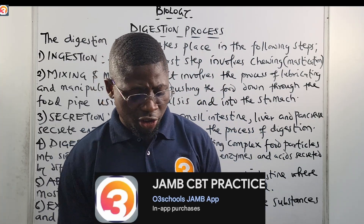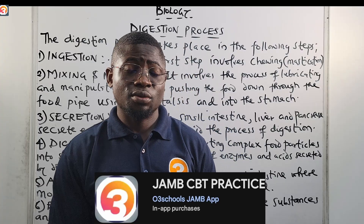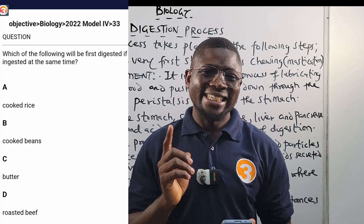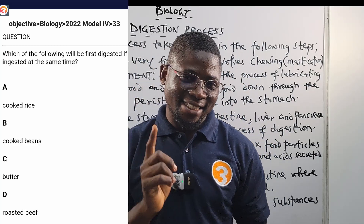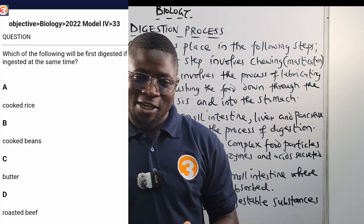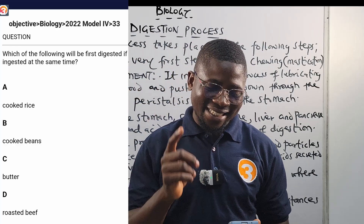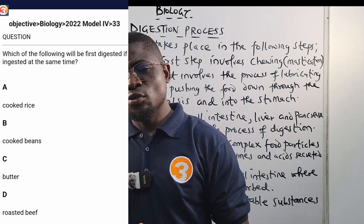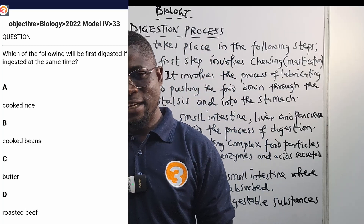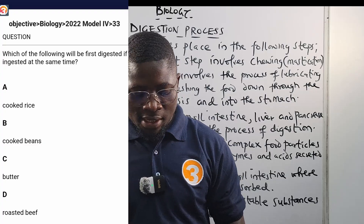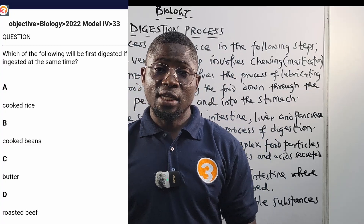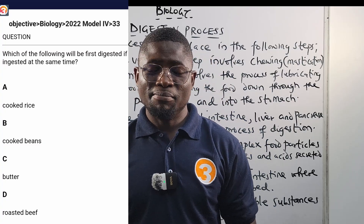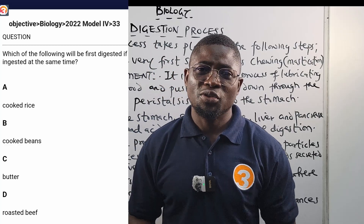Let us see a JAMB past question from the application — it's a biology question, 2022 number 33. It says: which of the following will be first digested if ingested at the same time? So if all of these food substances are taken into the mouth at the same time, which will get digested first? A: cooked rice, B: cooked beans, C: butter, D: roasted beef.